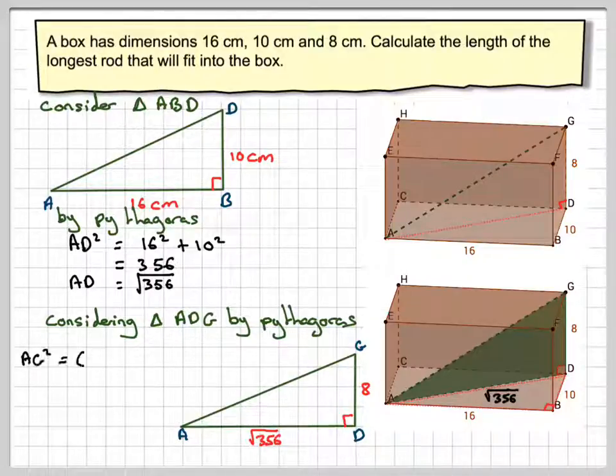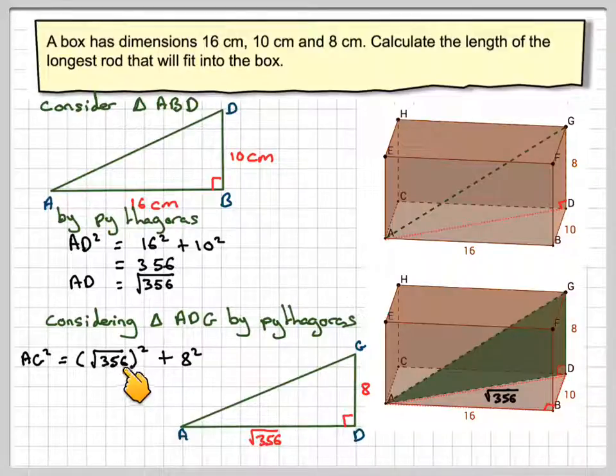And therefore the length of the rod will be AG squared is equal to the square root of 356, all squared, plus 8 squared. Now, if you square root something and square it, you end up with the same thing.